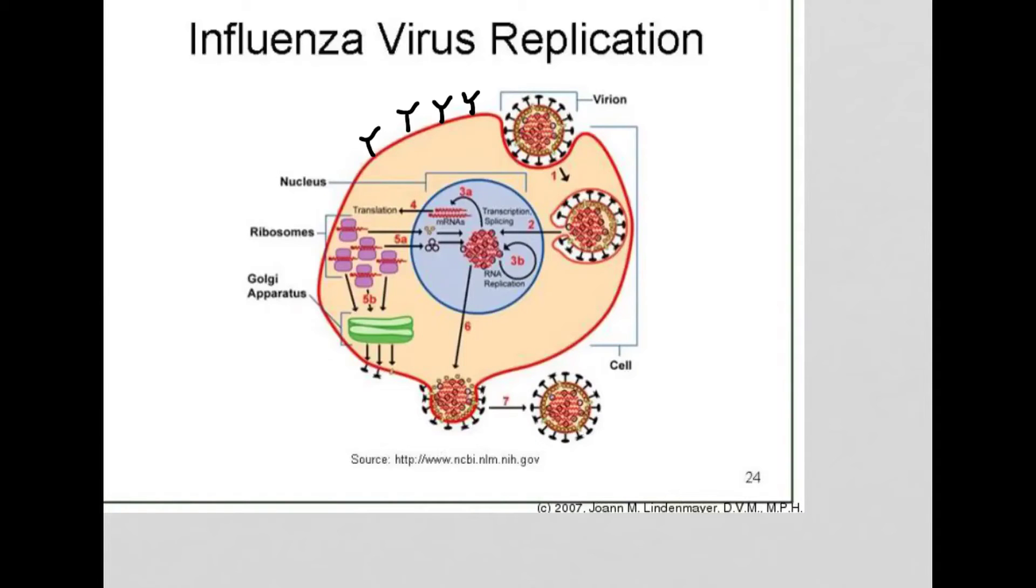Now, when the virus docks to the receptor, it then is engulfed by the cell so that the cell takes it up. And in the cell plasma, what happens is that these spiky things are removed. It's a little bit like taking off the coat of the virus. And actually, this process is also called uncoating.